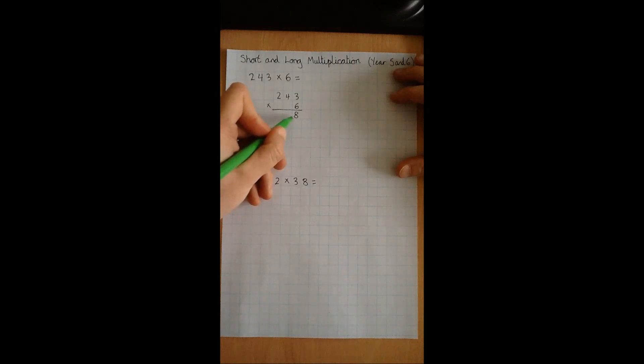And because we've got a 1 in the tens column, we carry that across. 6 multiplied by 4 is 24, plus the 10 that we carry, so that gives us a 5. And we carry the 2.